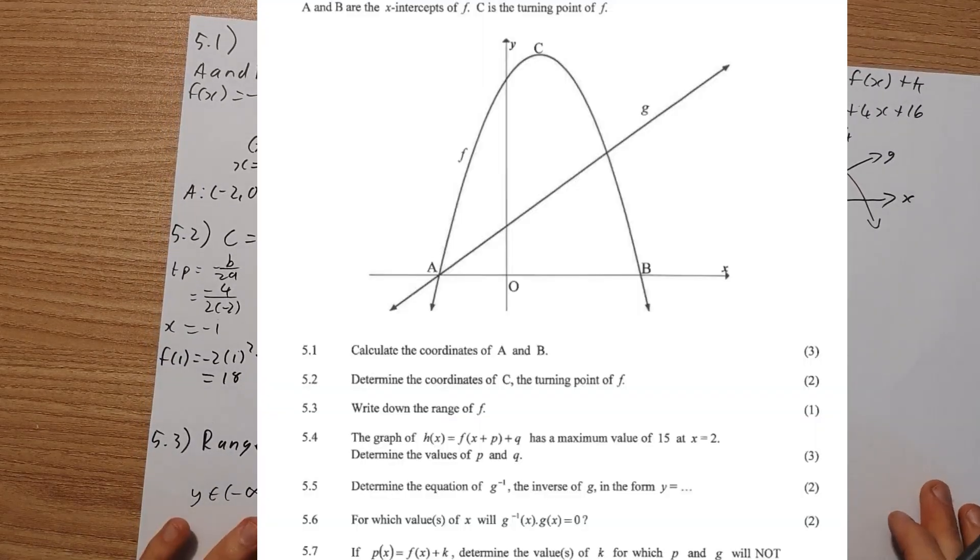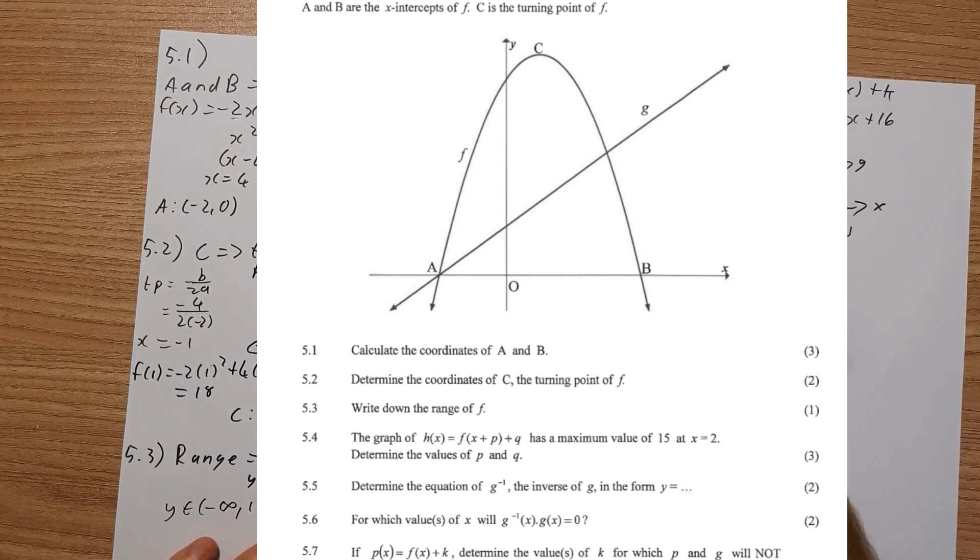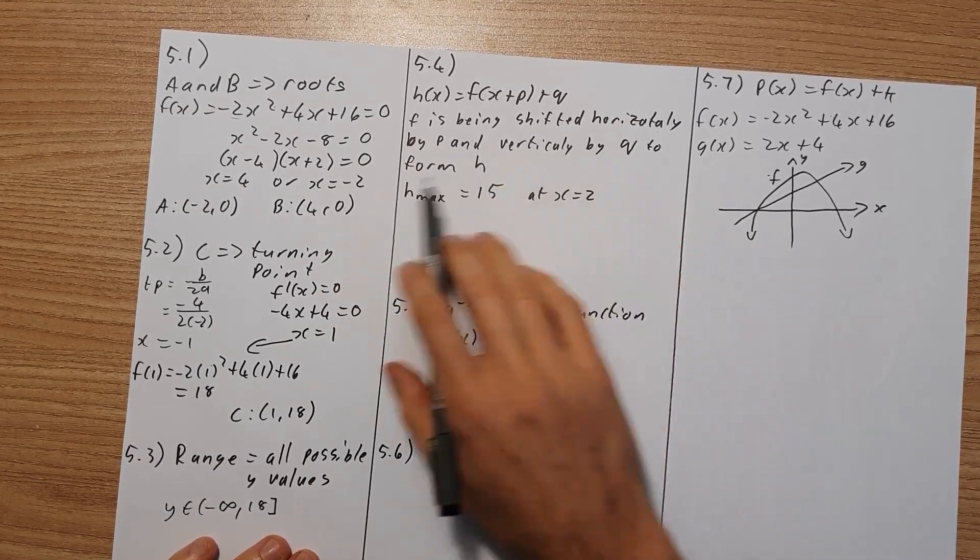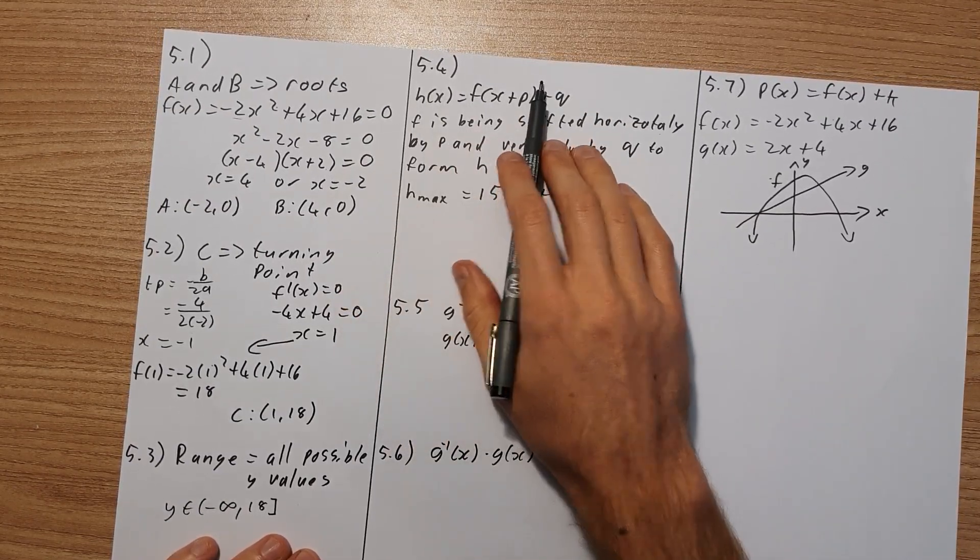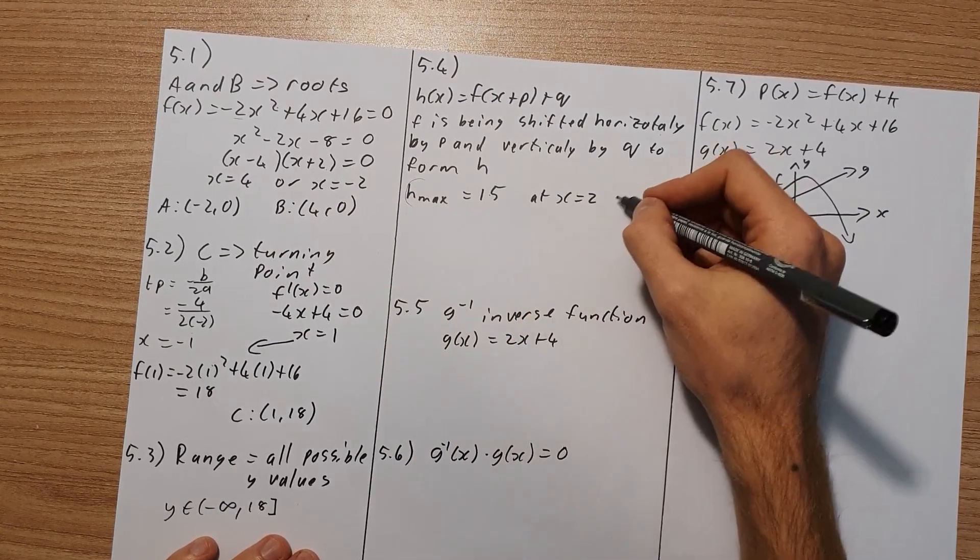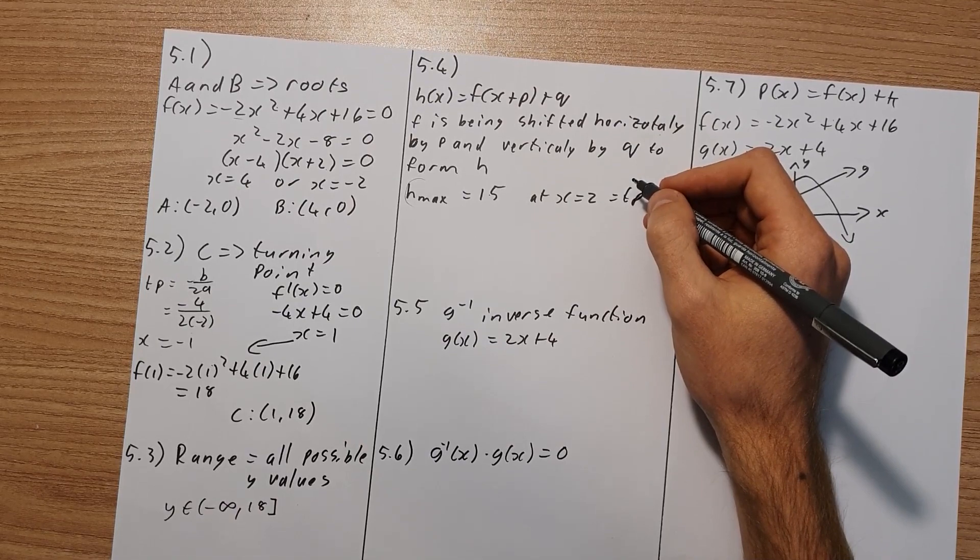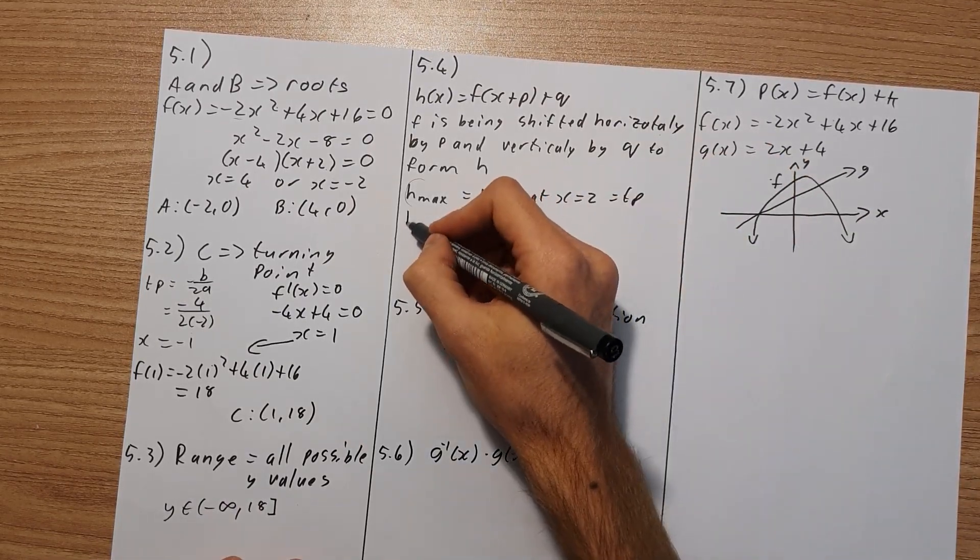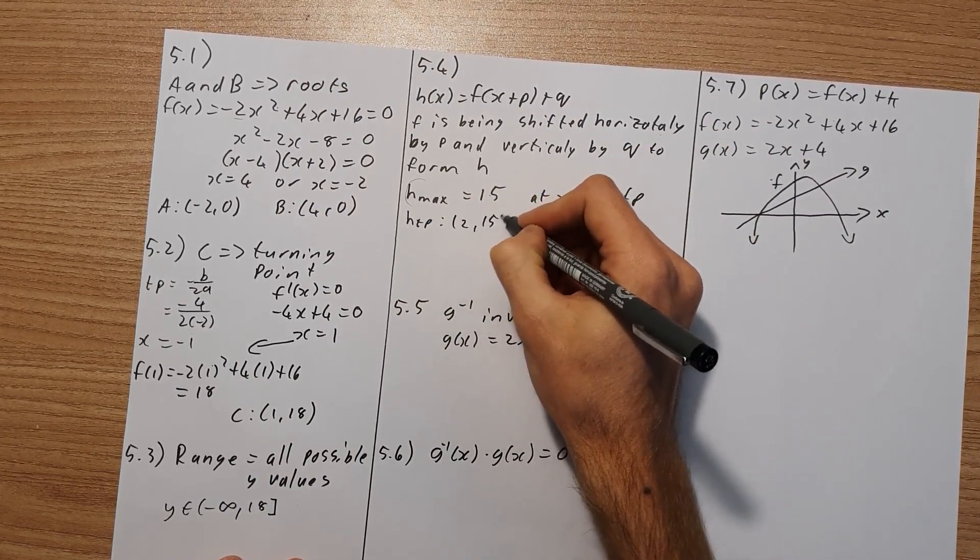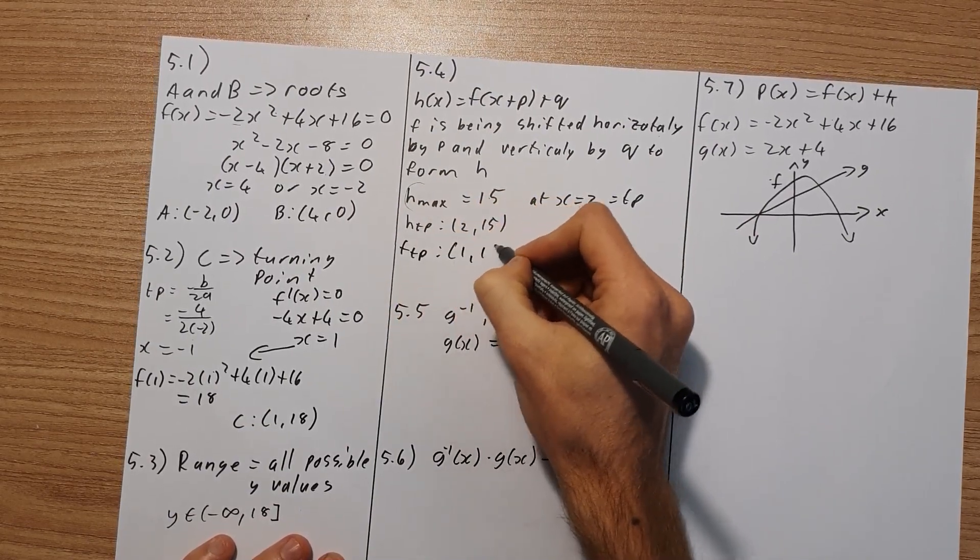Now 5.4 says h of x equals f of x plus p, plus q. So it says f is being shifted horizontally by p and vertically by q to form h. But they tell us that the new maximum for h is 15 at x equals 2. So this is your turning point for the h function. So the turning point for h is 2 and 15. But what was our turning point for f? f's turning point was 1 and 18.